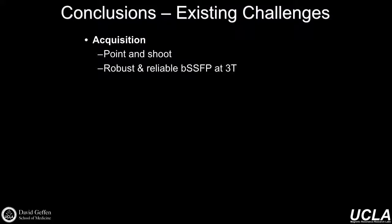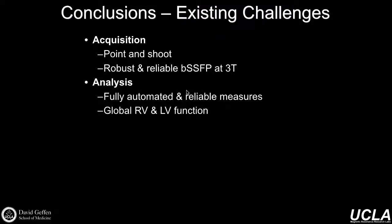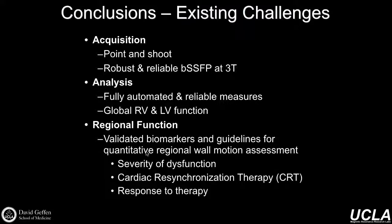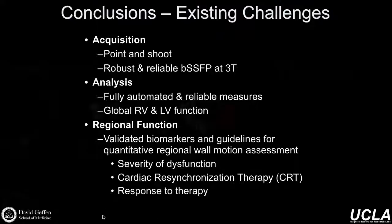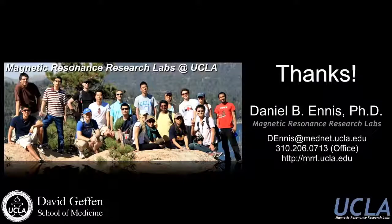In conclusions: the acquisition really needs to be more point-and-shoot — that 'acquire in real time, figure it out later' approach is pretty robust at 1.5T, but 3T is really challenging. The analysis remains imperfect and fully automated approaches are really needed for both global RV and LV function. While regional function is really interesting, we still need validated biomarkers and guidelines for quantitative regional wall motion assessment for a variety of indications — so if you're looking for project spaces to work in, these are some really interesting application ideas. Thank you.